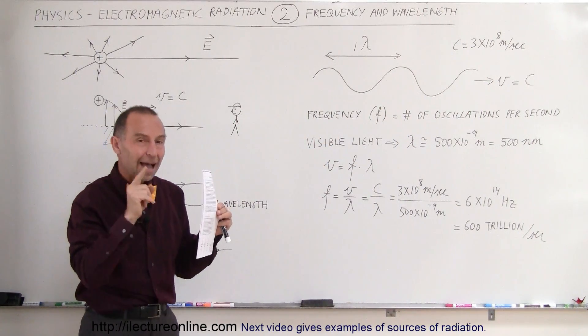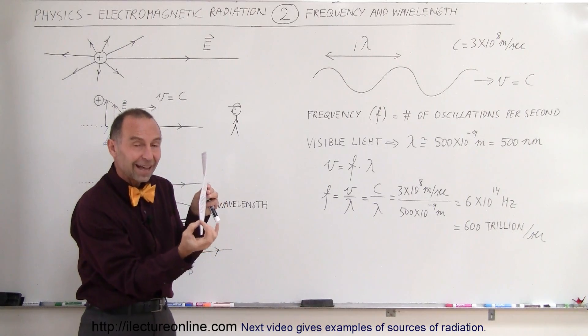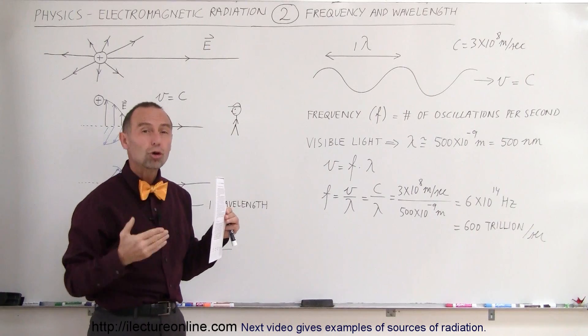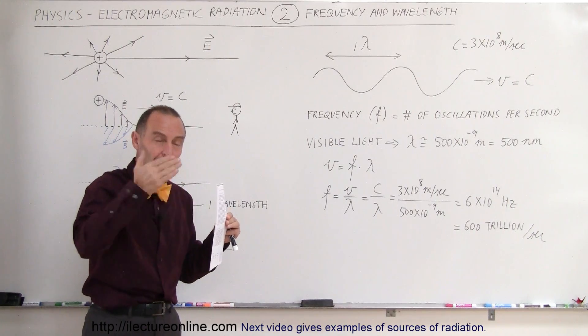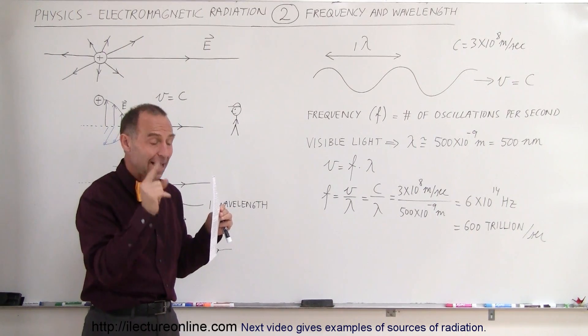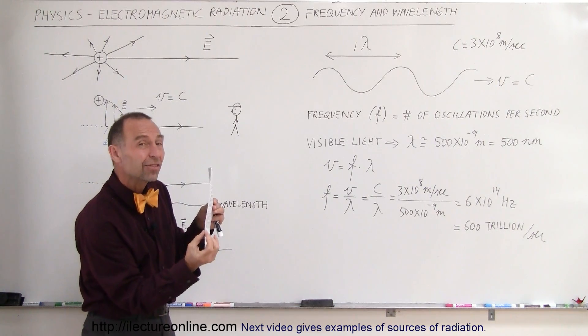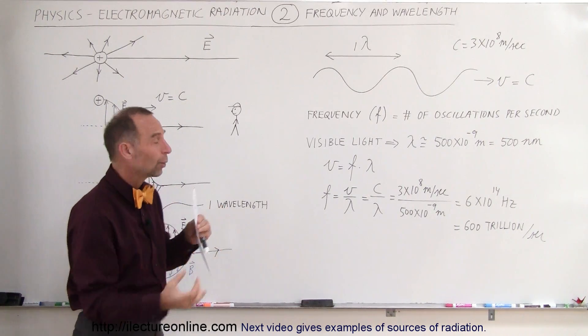But yet, in the time that it takes for light to travel this tiny little distance, 0.1 millimeter, it will have oscillated about 200 times. It will go up and down 200 times in the time that it takes, at the speed of 300,000 kilometers per second, to travel this tiny little distance of 0.1 millimeter, one-tenth of a millimeter.